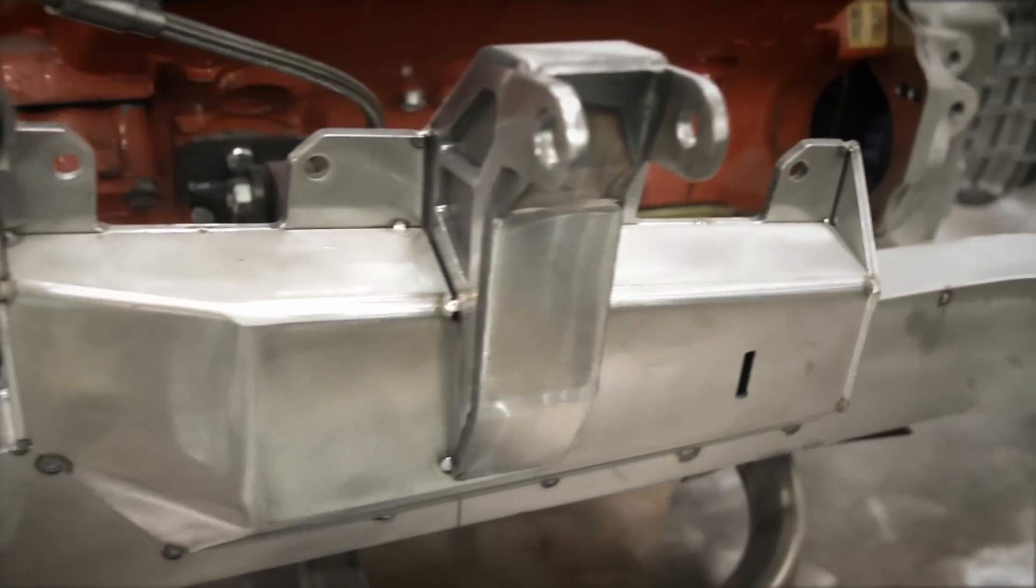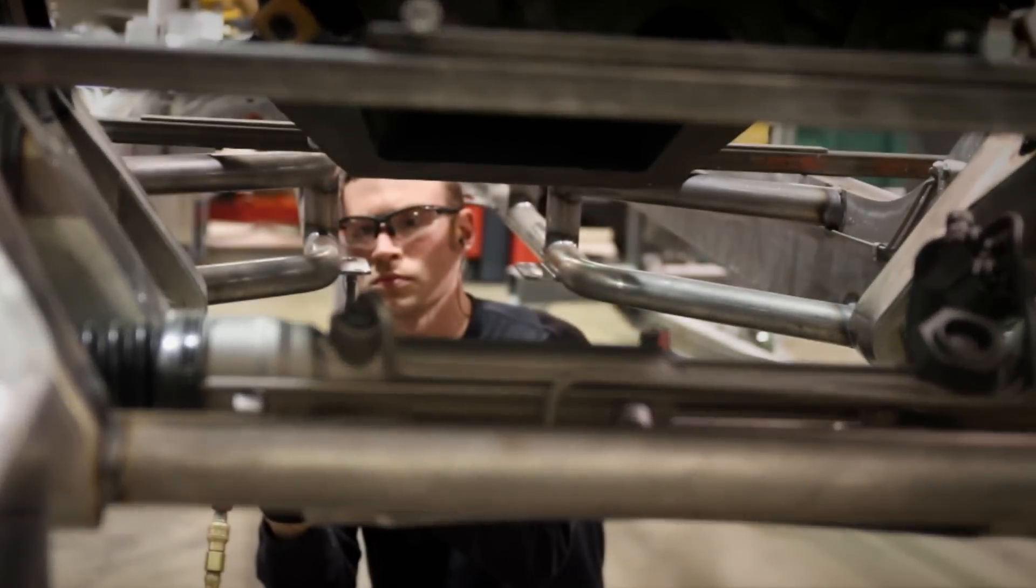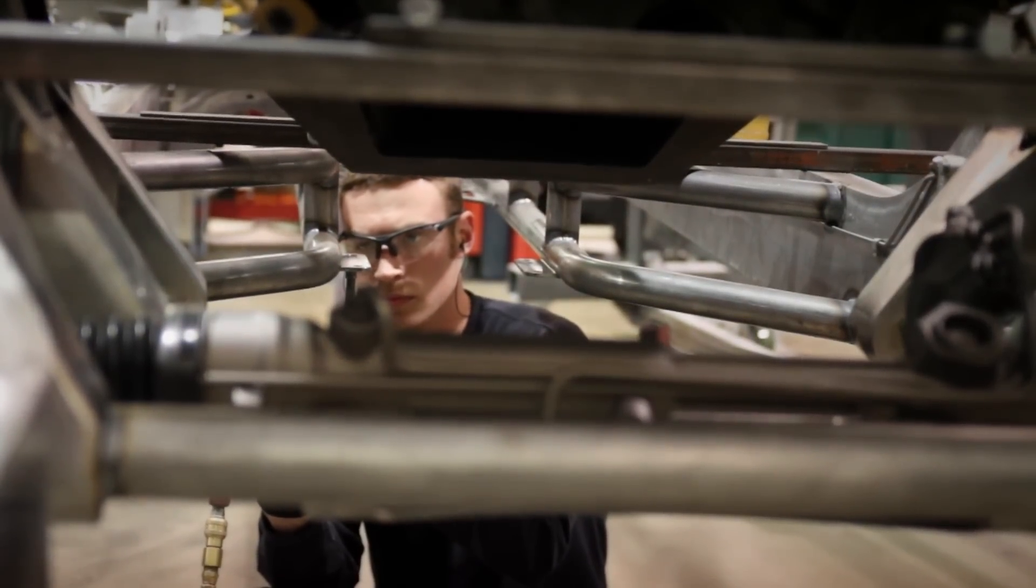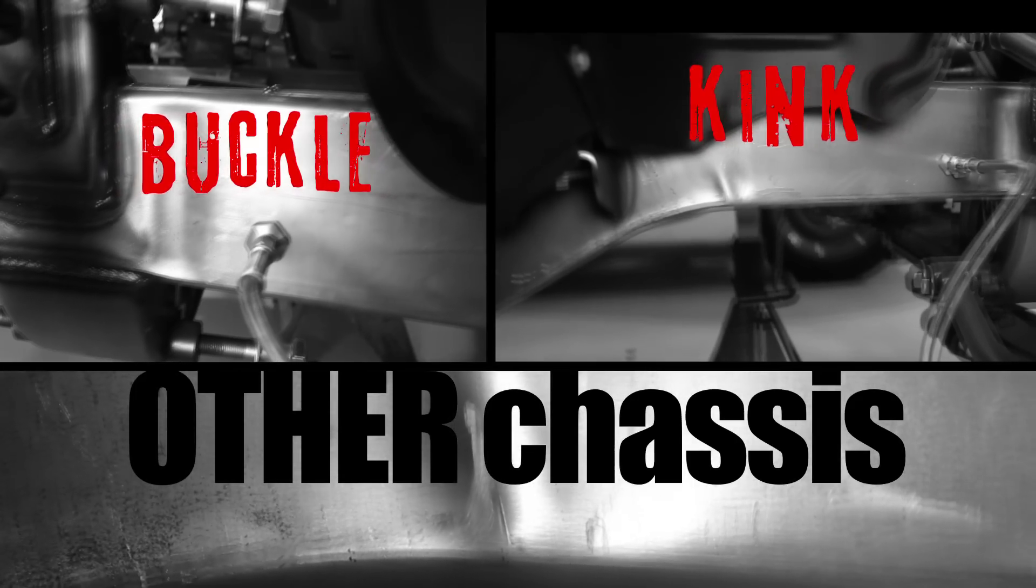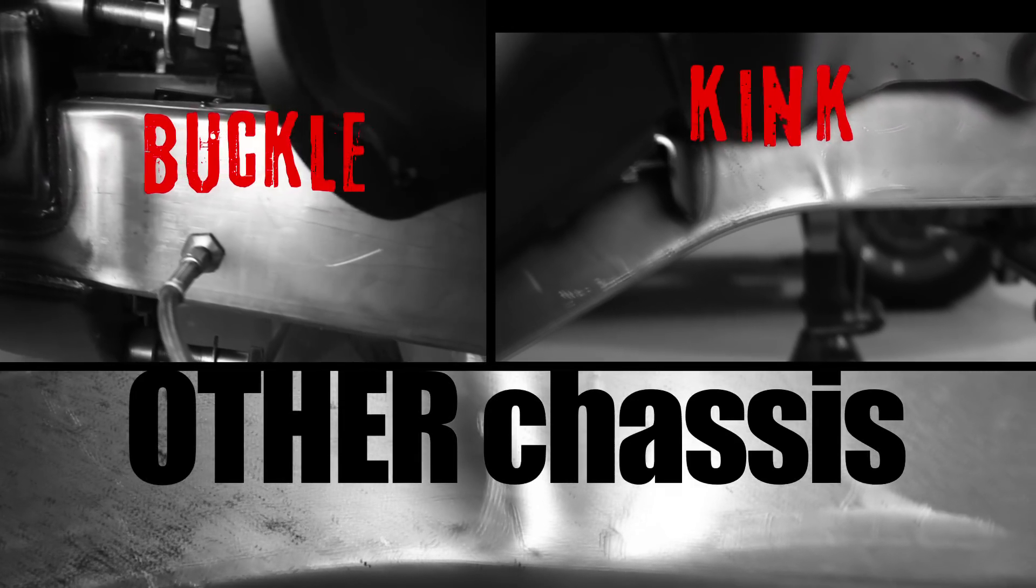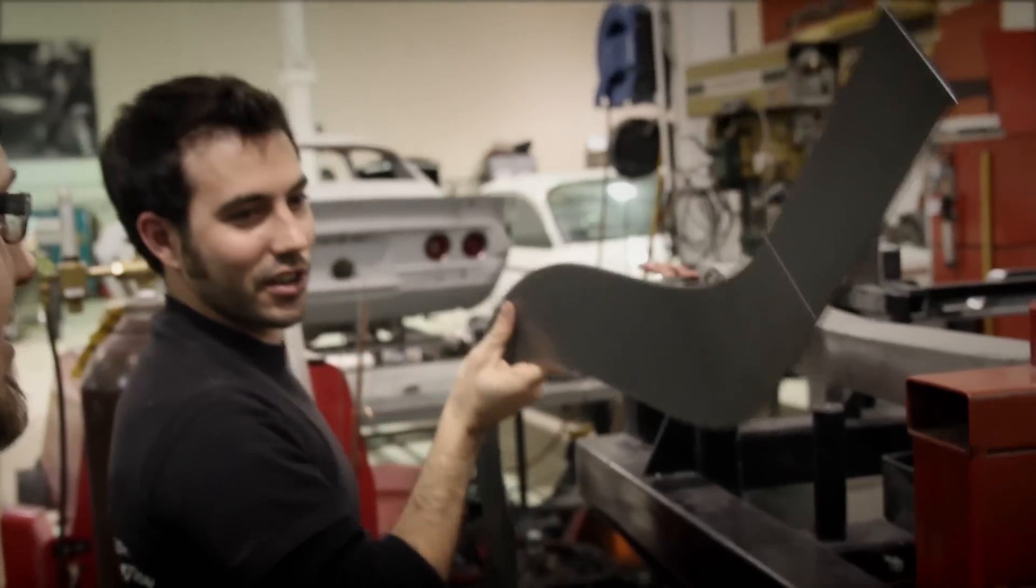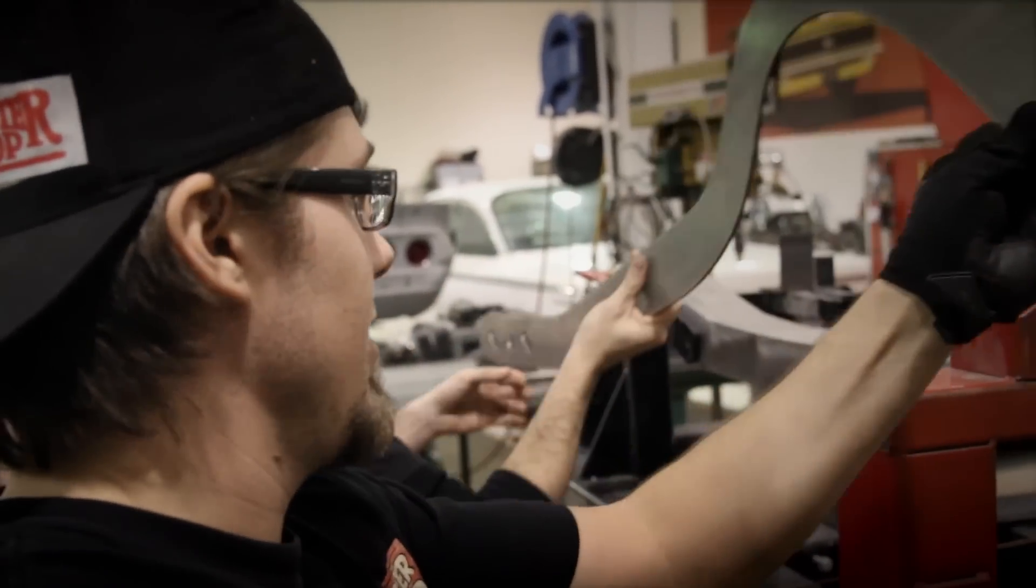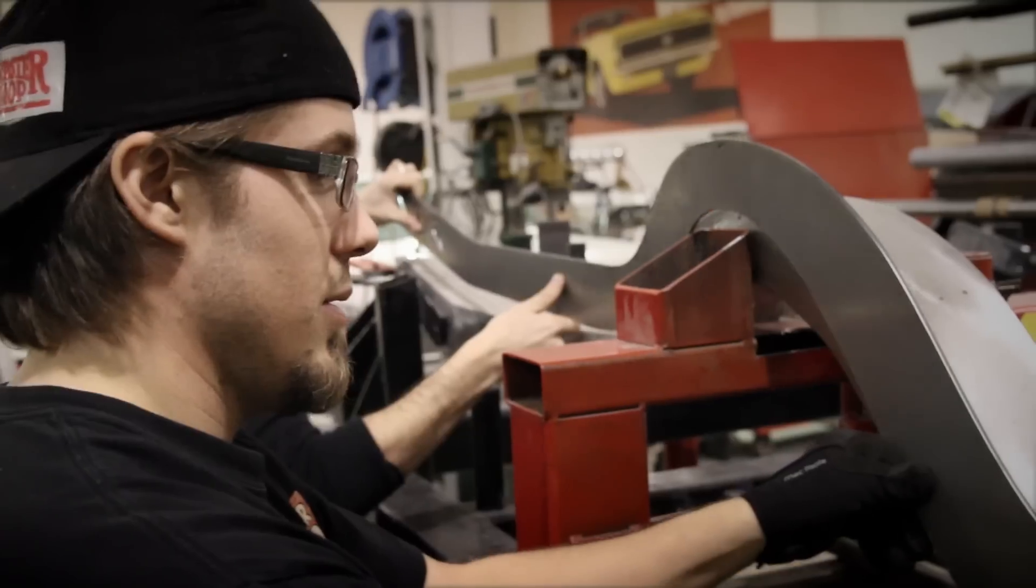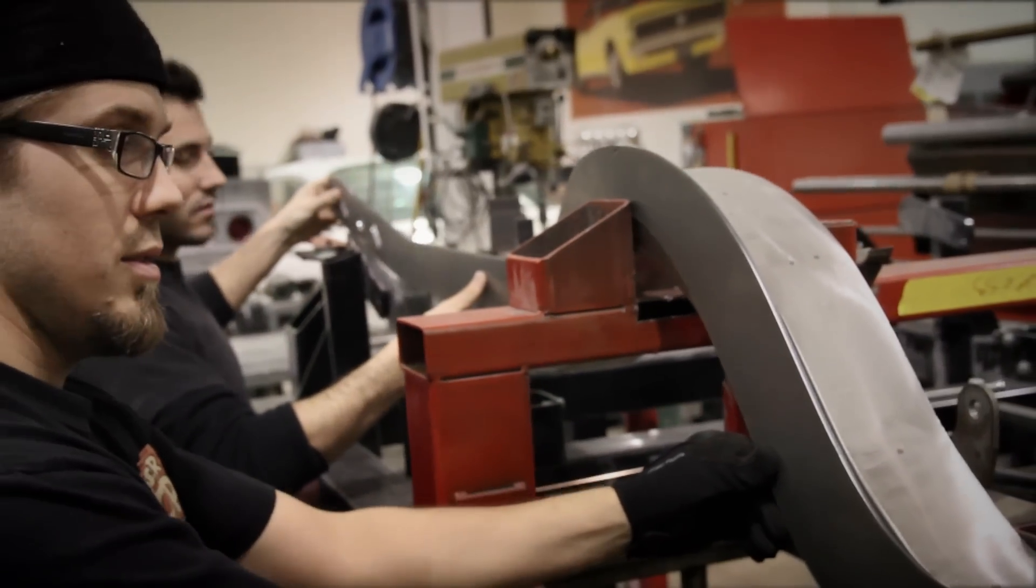There's a lot of differences in how we build a frame compared to what others in the industry are using. Where others are using bent square tube or miter cut and welded square tube, all of our frame rails are hand-built in-house. We start with an inside, outside, a top, and a bottom pattern.